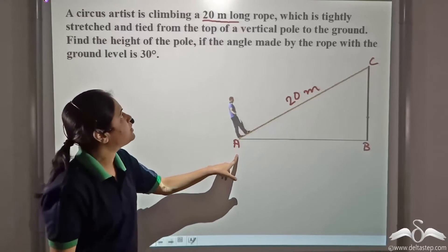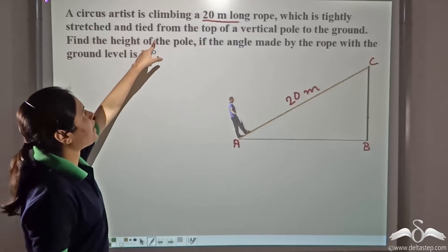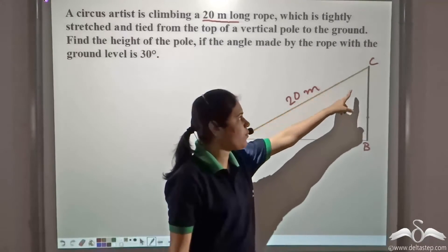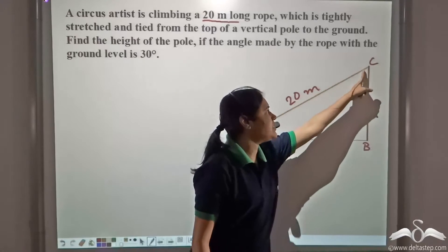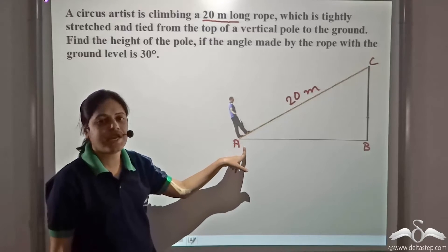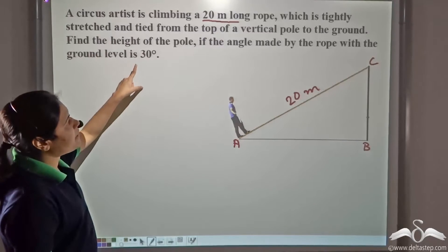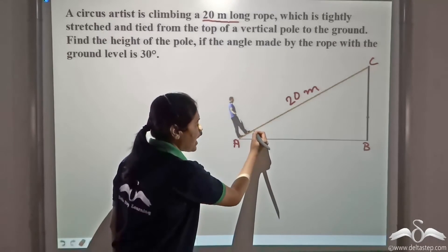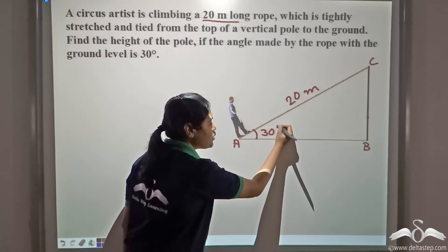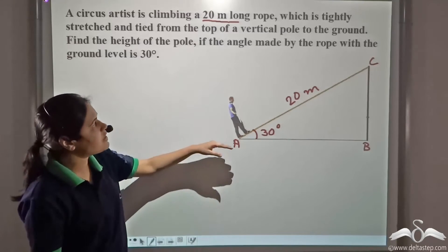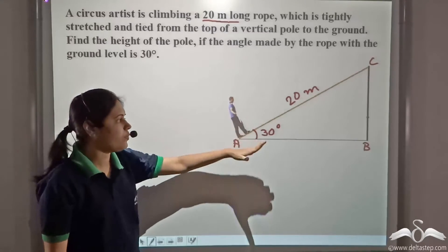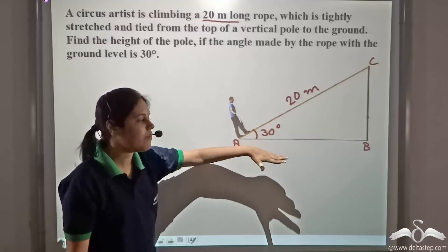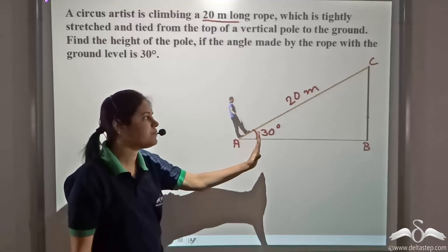The rope is tightly stretched and tied from the top of the pole to the ground. The pole is CB. It is tied from the top of the pole to the ground at point A, and it makes an angle with the ground level of thirty degrees. This rope makes an angle with the ground level which is equal to thirty degrees.